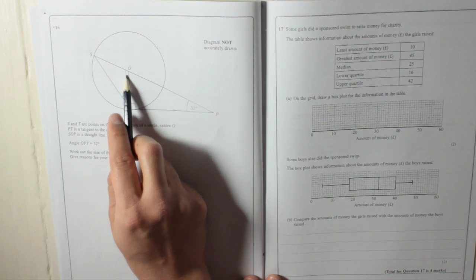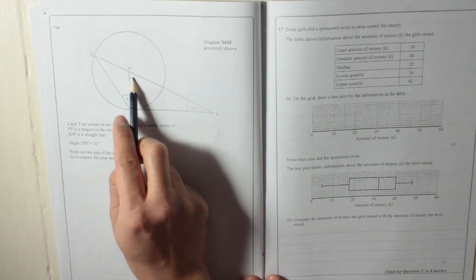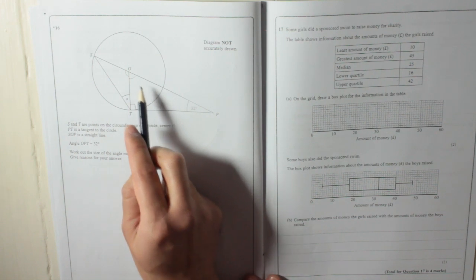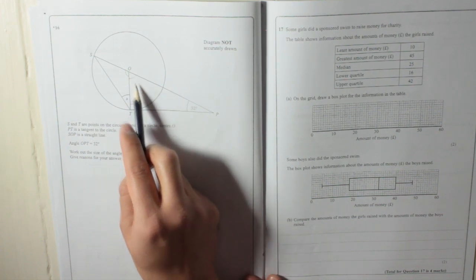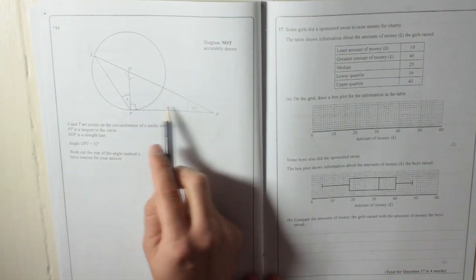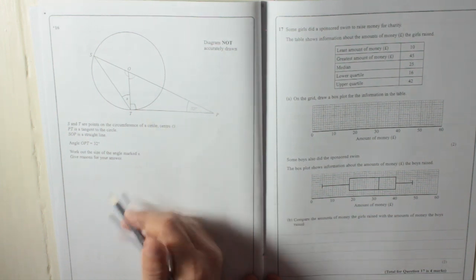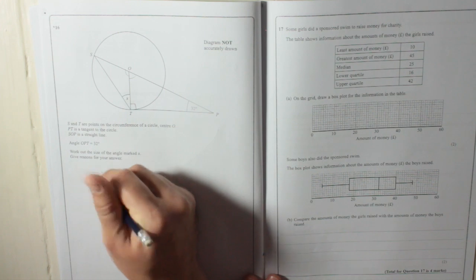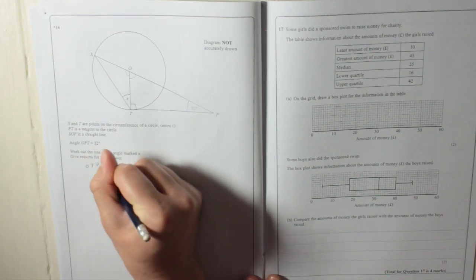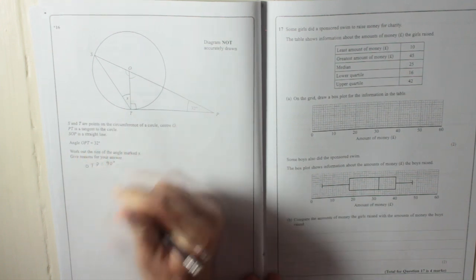And I can find this angle if I knew this angle. And I can find this angle because I know that's 90 and I know that's 32. So I'm going to write OTP equals 90 degrees.